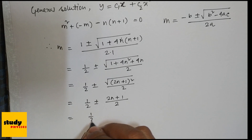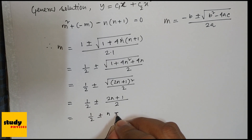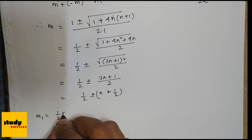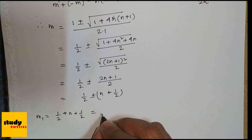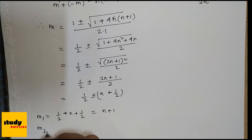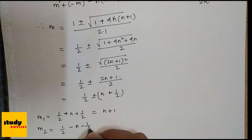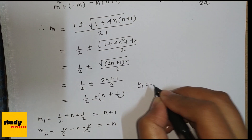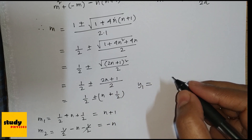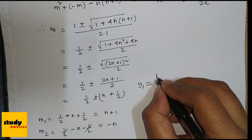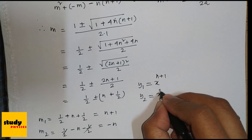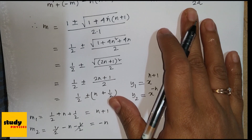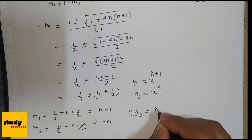This gives m = ½ ± (2n+1)/2 = ½ ± (n + ½). So m₁ = ½ + n + ½ = n+1, and m₂ = ½ − n − ½ = −n. Therefore y₁ = x^(n+1) and y₂ = x^(−n).